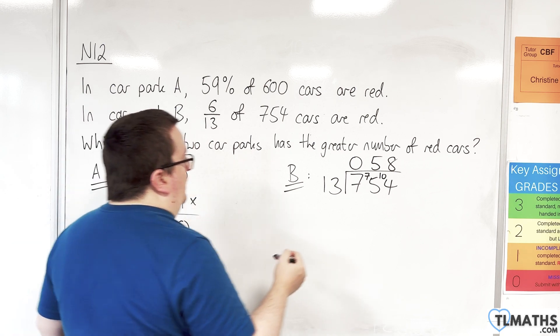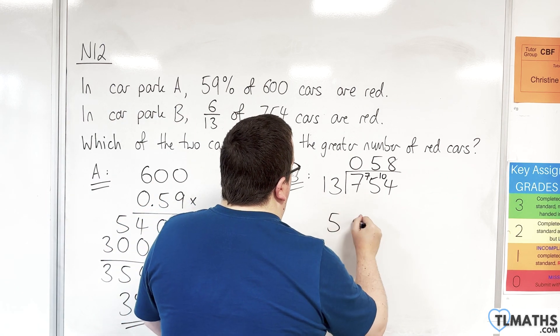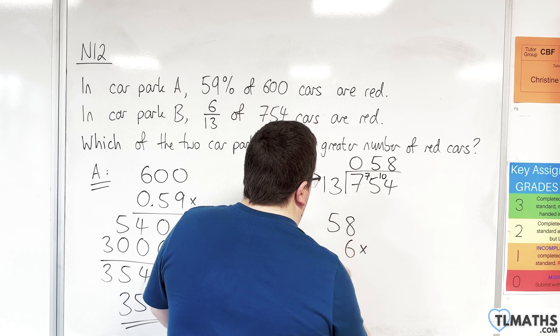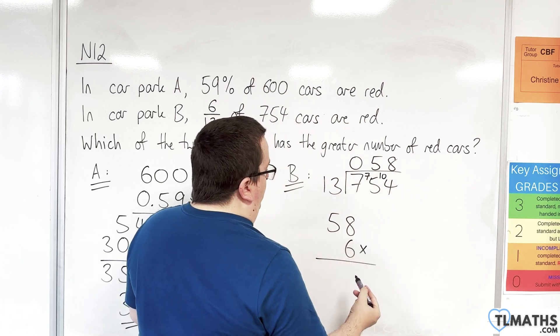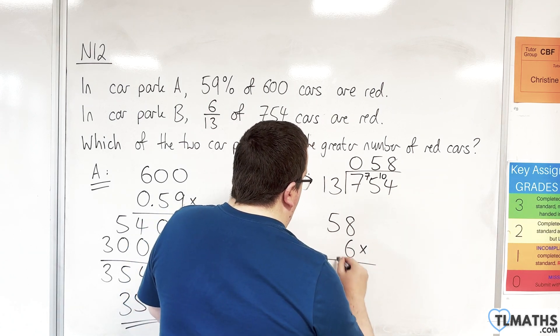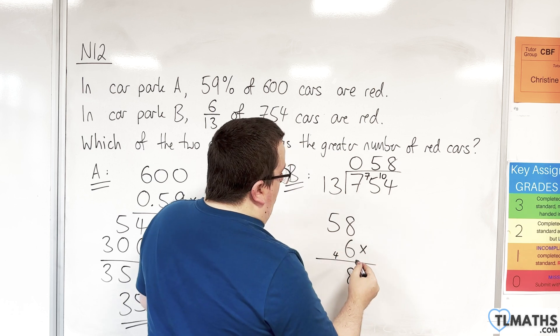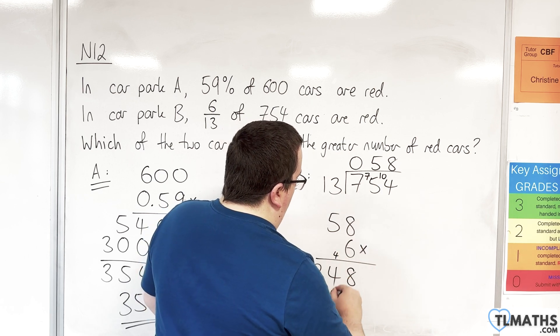We need 6/13, so I'm going to have to multiply 58 by 6. 6 lots of 8 is 48. 5 lots of 6 is 30, plus the 4 is 34.